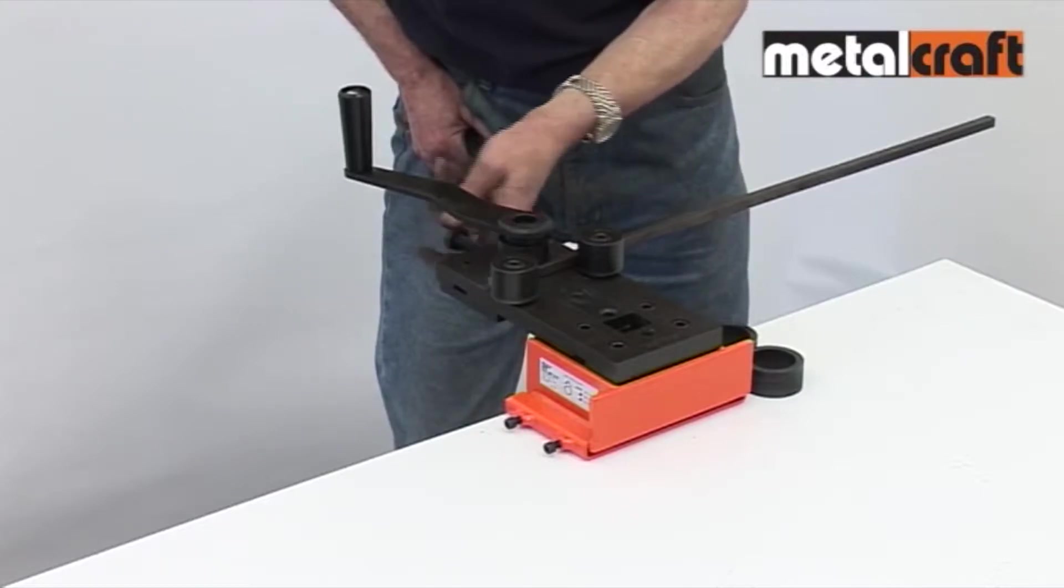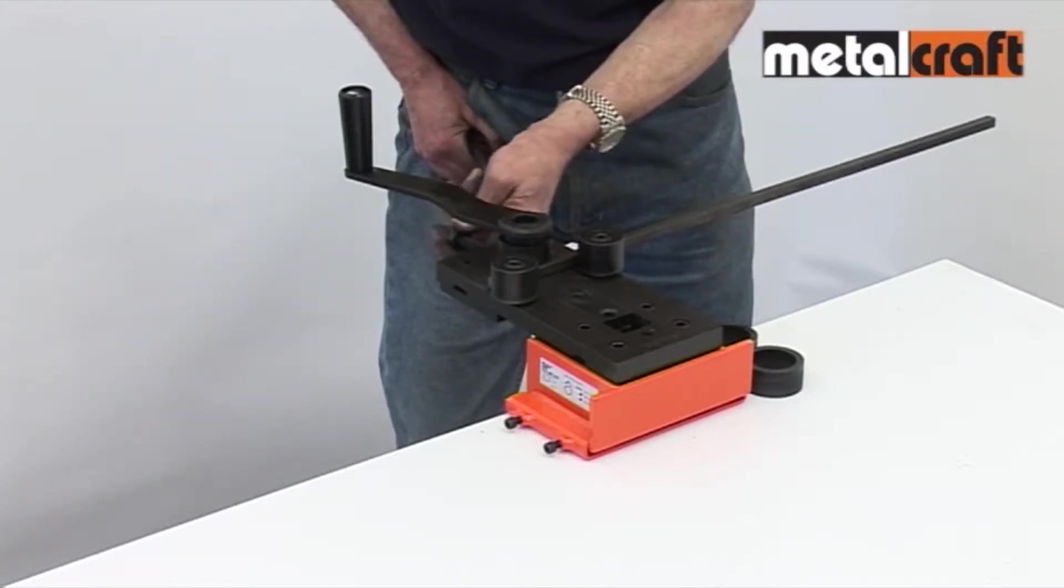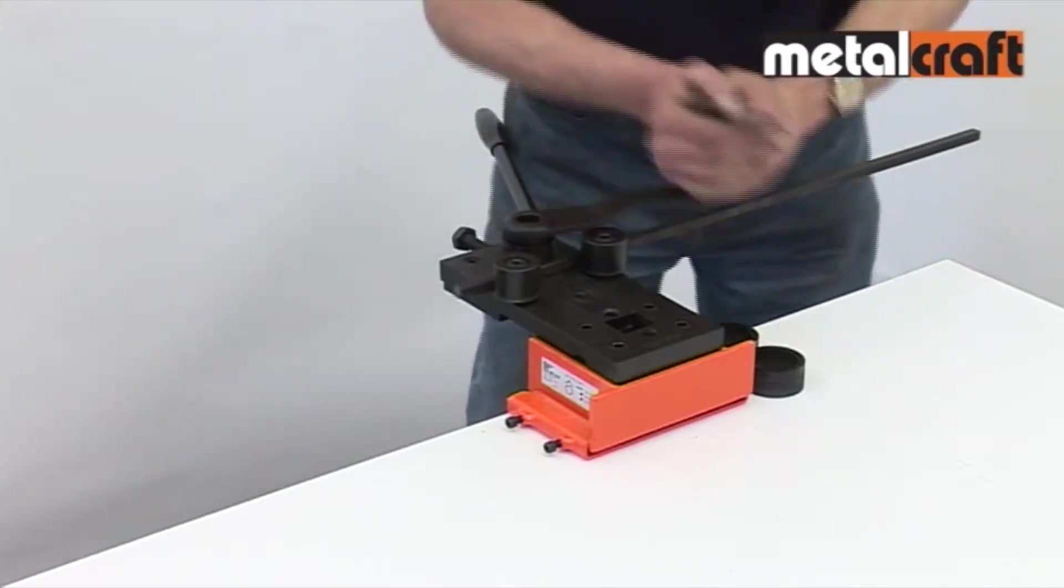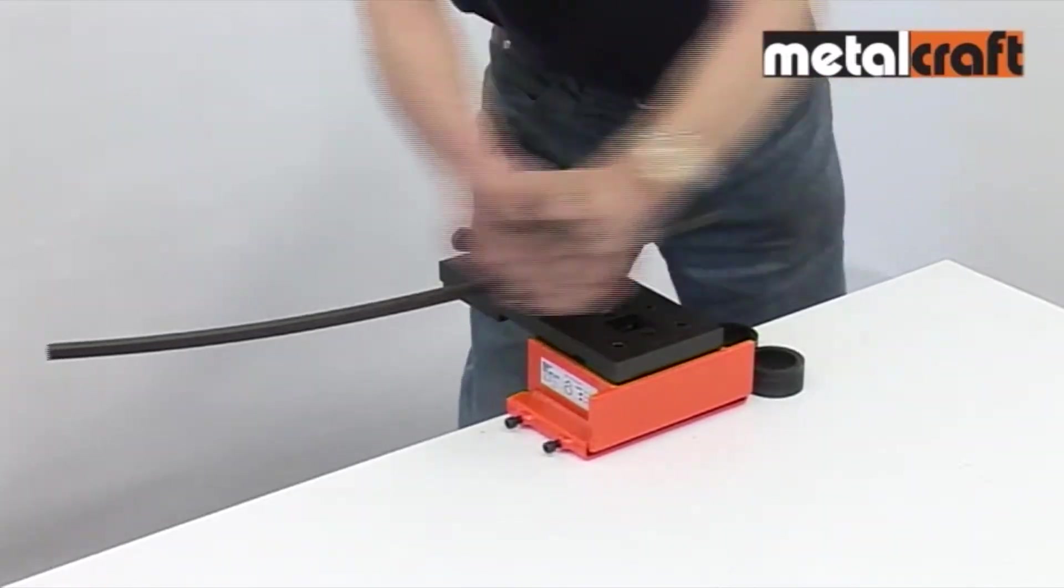You use the long handle to apply initial pressure, and then maintain that pressure using the adjusting screw. Then you drive the bar through the rollers, first one way, and then the other.